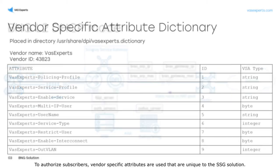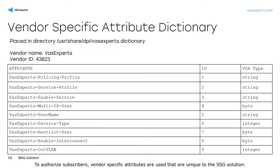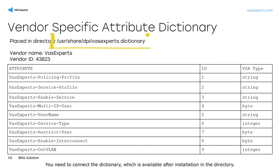To authorize subscribers, vendor-specific attributes are used that are unique to the SSG solution. You need to connect the dictionary, which is available after installation in the directory.